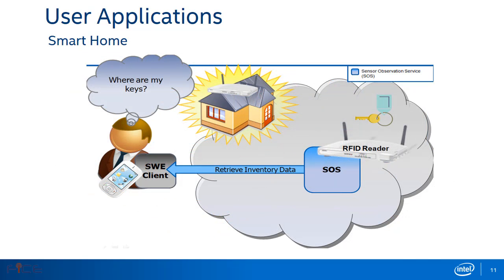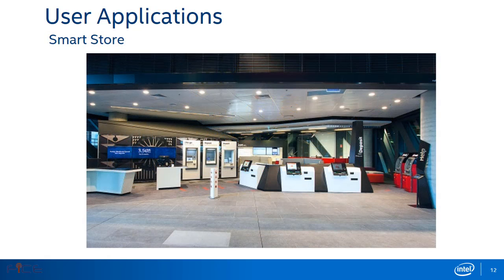In the home, an RFID sensor detects items and their location. The same sensor web client application could be used to query the RFID sensor for the location of a particular item or to inventory items by location. Similarly, using sensor web services and public access to a store's built-in sensors for inventory monitoring, the problem of finding an item in a large hardware store could be alleviated, saving time for people.